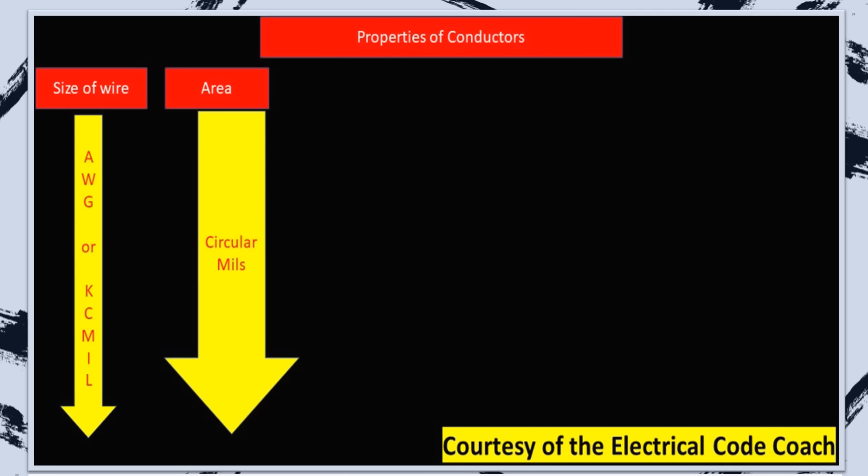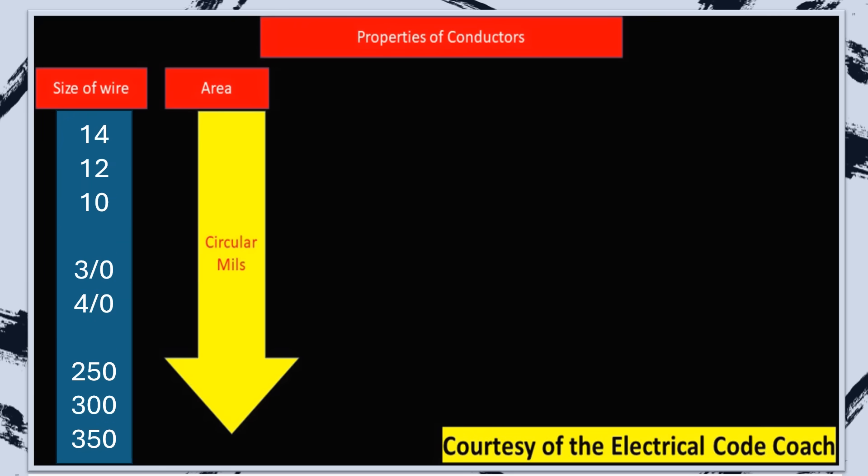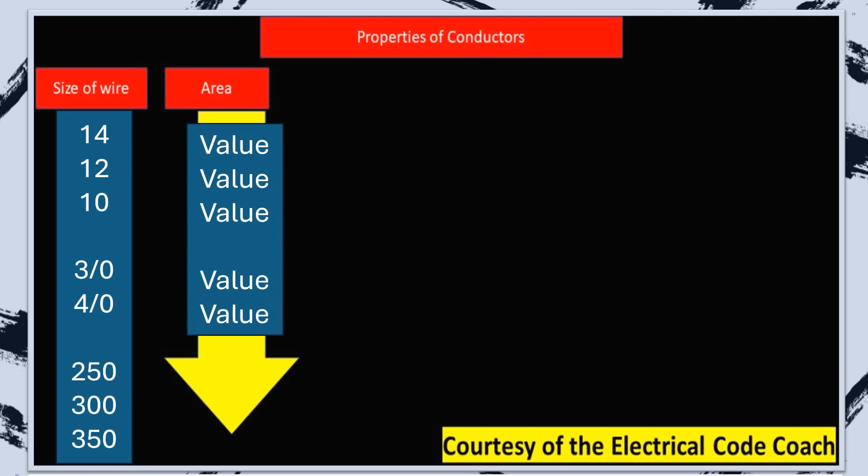On the left hand side, we're going to find our size of wire. You'll notice all of your familiar friends: 14, 12, 10. Then it goes down into larger numbers like 3/0 and 4/0. Then it goes into the kcmils. That's where we get those circular mils from: 250, 300, 350. In the next column over, we need to be sure to be in the area section, because that's where we're going to get our circular mils value. Each wire has a circular mils value.